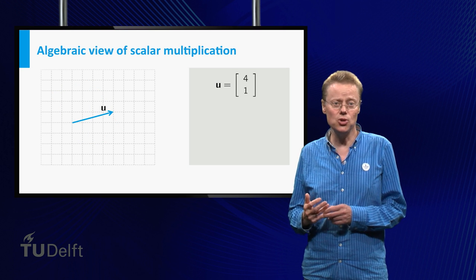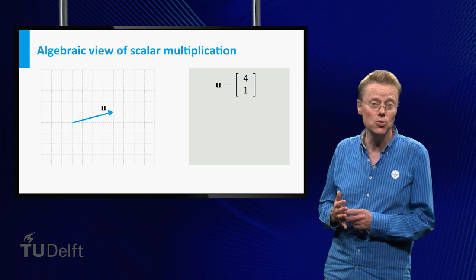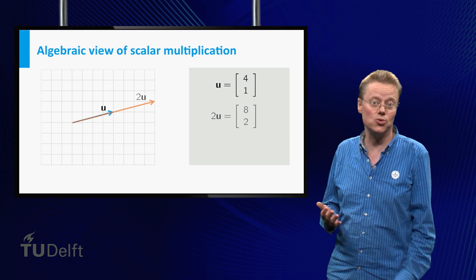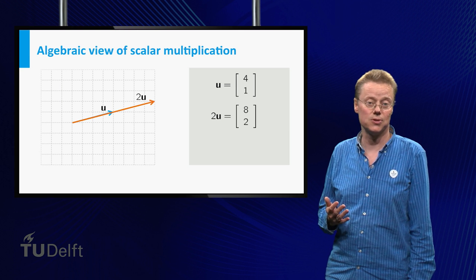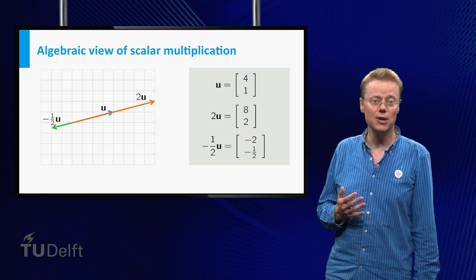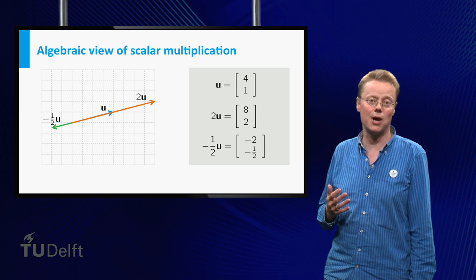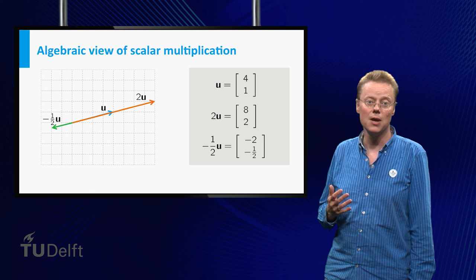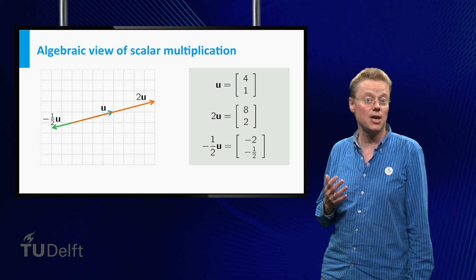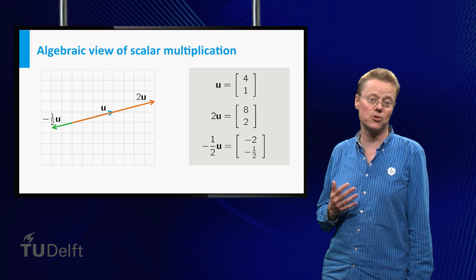Multiplying the vector u = (4, 1) by 2 gives (8, 2). Multiplying u by minus one half leads to (-2, -1/2). This can be seen from the geometric representation as well as from the algebraic representation.